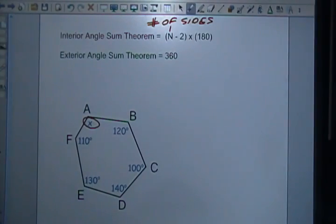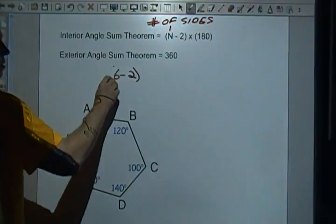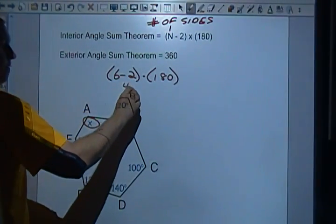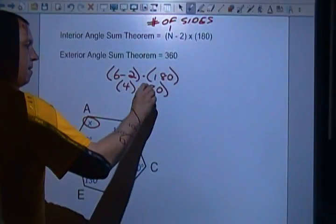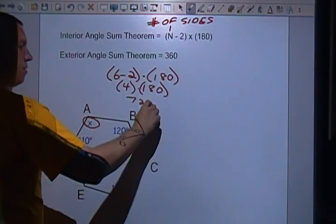Which is n minus 2 times 180. The number of sides in this case is six, so we're going to plug this in and we're going to say six minus two times 180. Well, that will be four times 180, and 180 times four is 720.